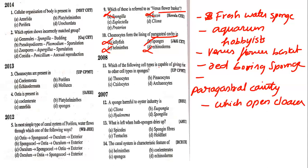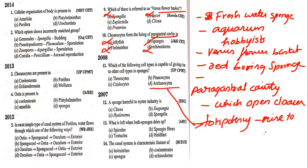Which of the following cells are capable of giving rise to other new types of cells? Already discussed — archaeocytes have totipotency. This is the third time I'm repeating: totipotency means giving rise to a new individual. That is done by archaeocytes. So the answer is archaeocytes.